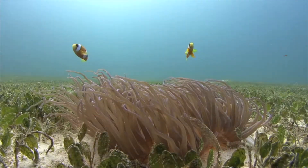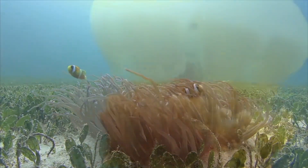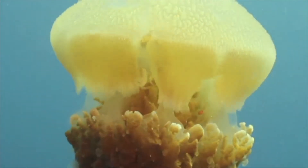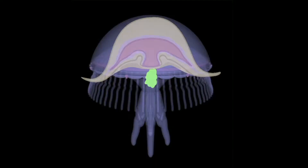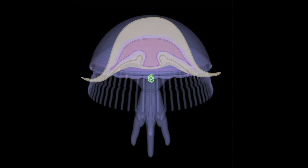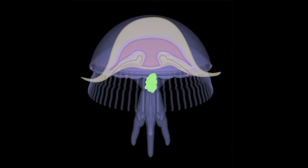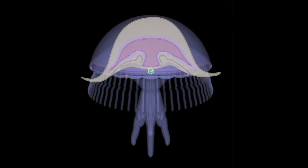One of the first types of digestive tracts was the gastrovascular cavity, found in cnidarians like jellyfish and sea anemones. In a gastrovascular cavity, food goes in and waste comes out through that same opening. Food enters the gastrovascular cavity where enzymes break down the food used by individual cells, and waste material is then expelled through the same cavity.